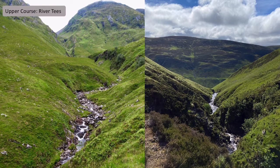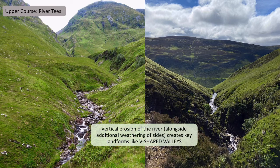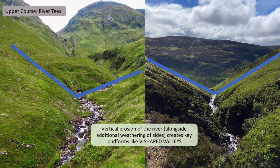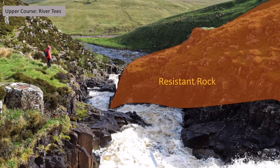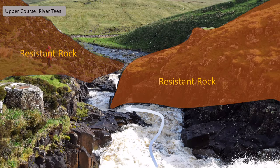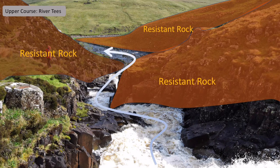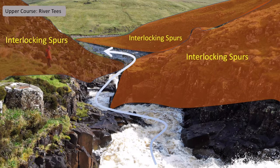In terms of landforms and the valley profile, we get V-shaped valleys. Because vertical erosion dominates, alongside weathering processes like freeze-thaw happening on the sides, we get these very distinctive V-shaped valleys in the upper regions of the River Tees. We also get interlocking spurs. There isn't a lot of discharge in the upper course, so when the river comes up against resistant rock it can't go through it — it goes round, skirting around resistant rock and eroding the less resistant rock in between, leaving landforms called interlocking spurs.